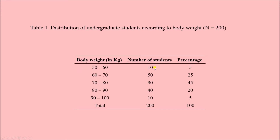From this table we can see that there are 10 students with body weight between 50 to 60 kg, 50 students with body weight between 60 to 70 kg, and so on, giving a total of 200 students. Percentages are also mentioned: 10 students out of 200 is 5%, 50 students out of 200 is 25%, and so on — they should sum to 100%.